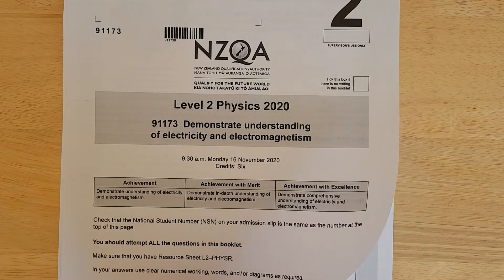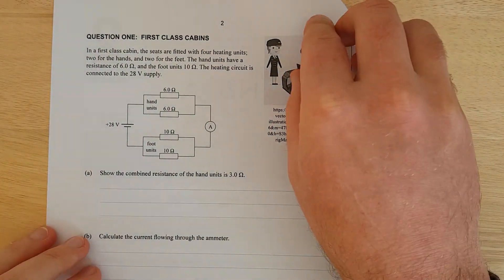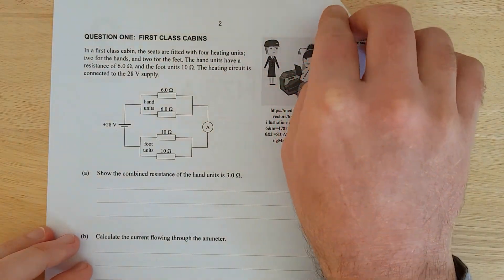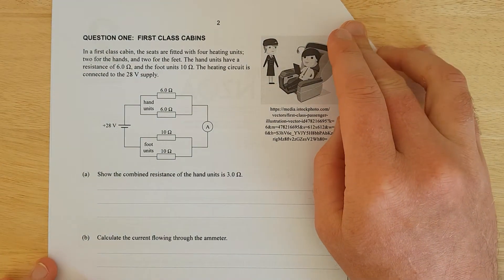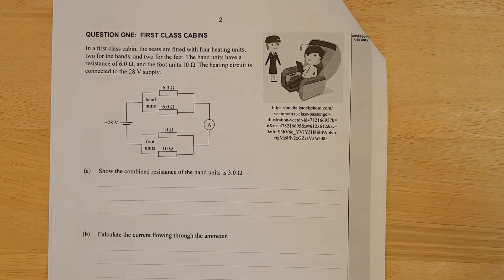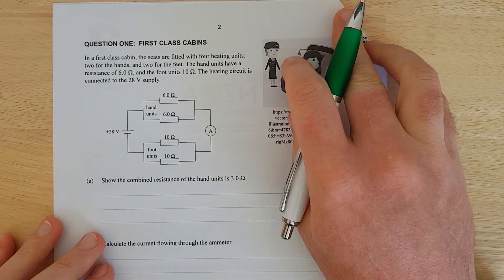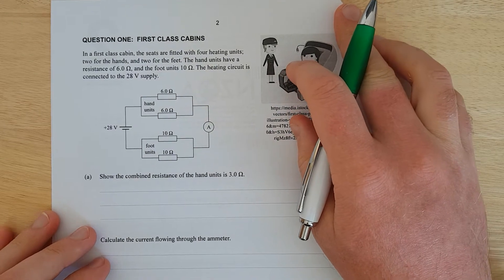Question 1 of the 2020 Level 2 Electricity Exam. In a first-class cabin, the seats are fitted with four heating units: two for hands, two for feet. The heat units have a resistance of 6 ohms and the foot units have 10 ohms. The heating circuit is connected to a 28-volt supply.